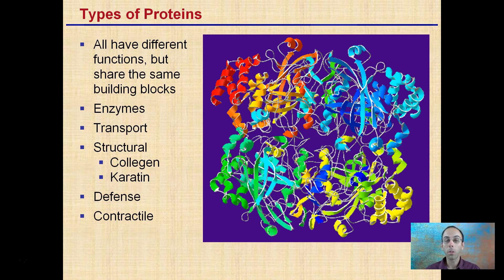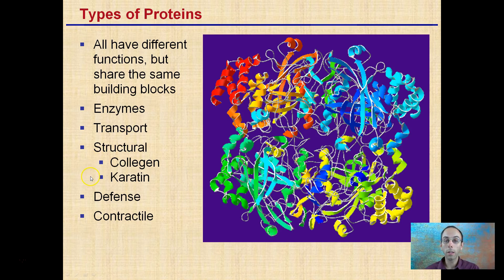Some examples or classifications of proteins: they could be used as enzymes, they could be used for transport, some proteins are structural such as collagen or keratin, some are used for defense, and some are contractile.